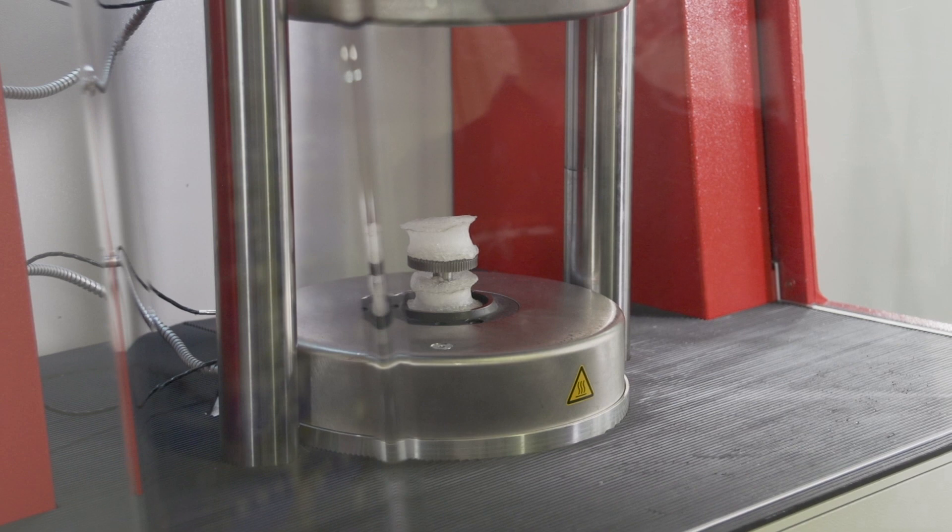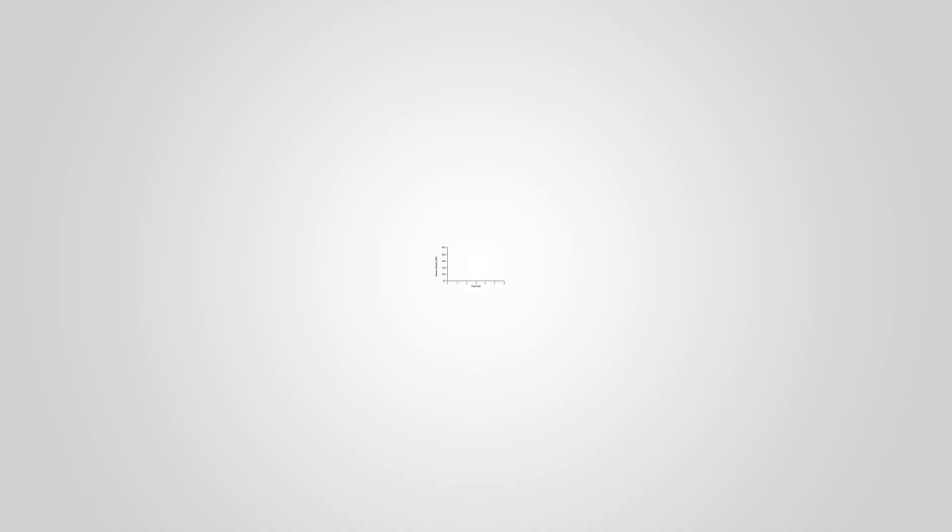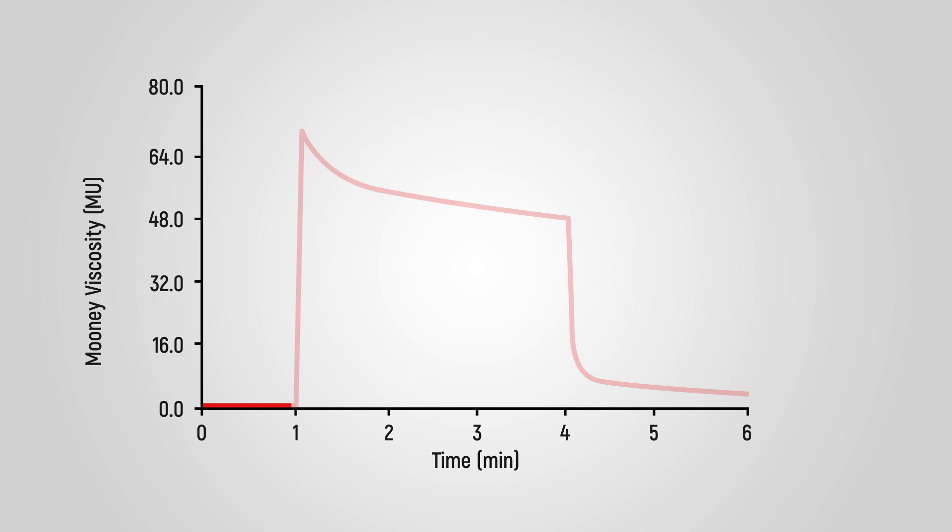In the first step, conditioning, the upper platen closes and the sample is preheated for one minute. Since the rotor is not turning at this point, there is no torque response from the material and the line is level at the bottom of the graph.